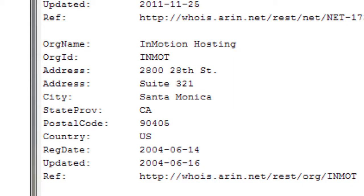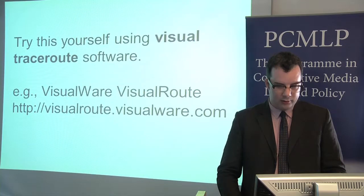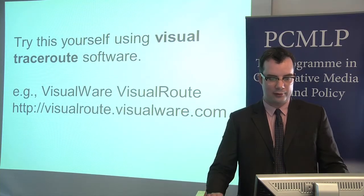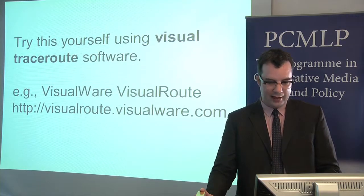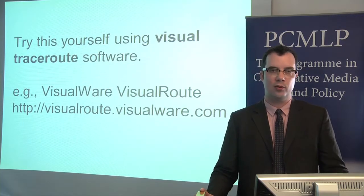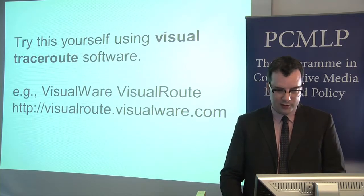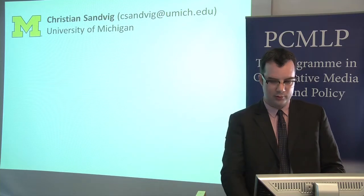Going back to the traceroute software, you see that with this software I can do things like look up who owns a particular computer. These records are not always accurate, but in this case it appears that visitpalestine.ps is at least hosted at 2828th Street in Santa Monica. This kind of information is available although sometimes it can be unreliable. If you'd like to pursue this on your own there are a variety of free traceroute software packages you can download, and at least it will give you some sense of how the internet works and why certain websites or mail servers might be located in one place or another. This concludes my presentation and I hope this is useful to writing briefs related to the internet. Thank you very much.